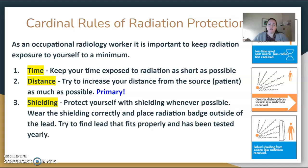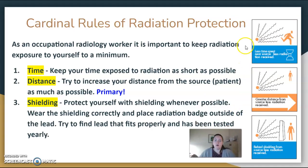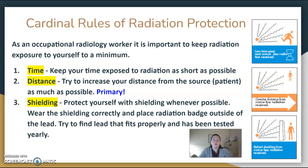Our first section is about cardinal rules. As an occupational worker, it's important to keep radiation exposure to yourself at a minimum, not only to your patients. Time, distance, and shielding are the three cardinal rules. Keeping the time you're exposed to radiation as short as possible is really important. The easiest way to reduce your dose is to increase your distance — it's the easiest one.